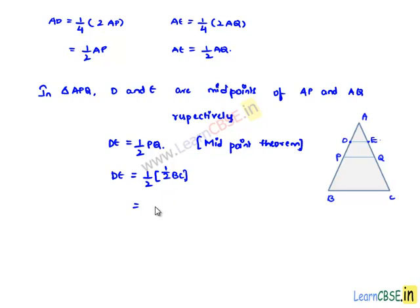Therefore, half times half is nothing but one-fourth BC. So finally we got that DE is equal to one-fourth of BC. This is the required proof.